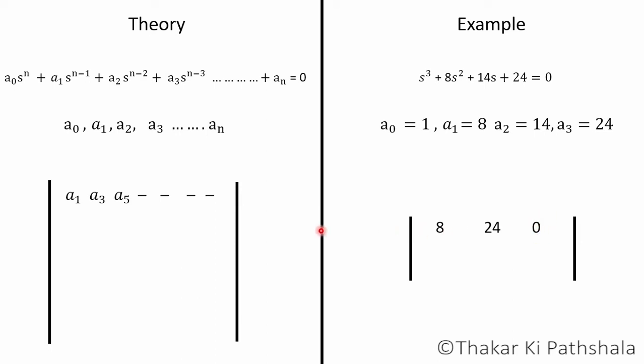In order to write the next row of Hurwitz determinant, just take all the even quantities like a₀, a₂ up to as many you have. In our case, a₀ = 1, a₂ = 14. There is no a₄, so we are taking a₄ = 0.